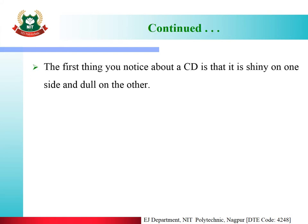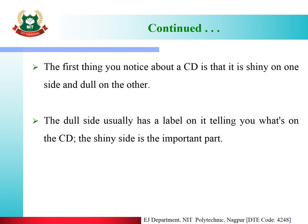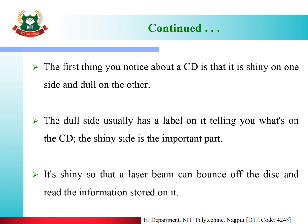The first thing you notice about a CD is that it is shiny on one side and dull on the other side. The dull side usually has a label on it telling you what's on the CD. The shiny side is the important part — it is shiny so that a laser beam can bounce off the disk and read the information stored on it.